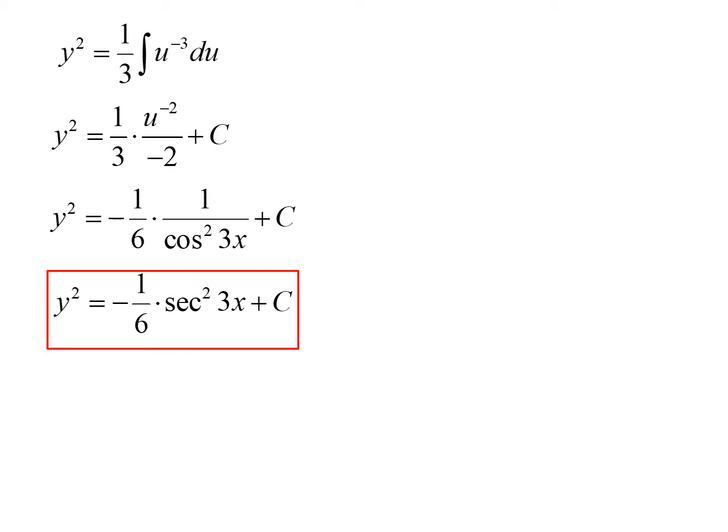We'll leave this as an implicit solution: y squared equals negative 1 sixth times secant squared of 3x plus c. If we wanted an explicit solution, we could take the square root of both sides, but for this problem we'll leave it implicit. It's important to read the directions on your problems to see if they specify explicit or implicit. If it doesn't specify, leaving it implicit should be fine, but if it asks for explicit, you'd want to get y by itself.